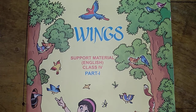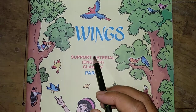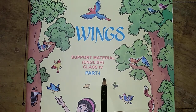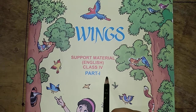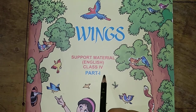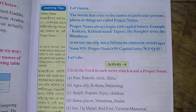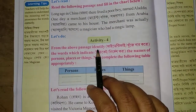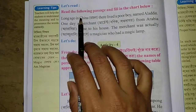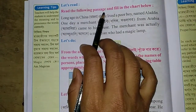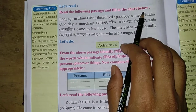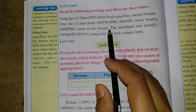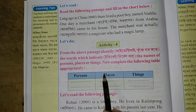Hello students, how are you today? I am talking about Wings support material, Class 5, Part 1 and Class 4, Part 1, English Part 1. We will complete Activity 4. Activity 4 says: read the following passage and fill in the chart below.